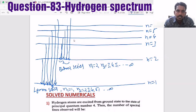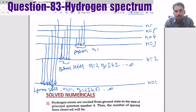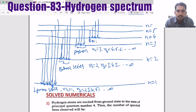Similarly, when the electron comes to the third orbit or second excited state, those lines fall under the Paschen series, where N1 is 3 and N2 begins from 4, 5, 6, up to infinity. Next is the Brackett series, where N1 is 4 and N2 begins from 5, 6, 7, 8, and so on.